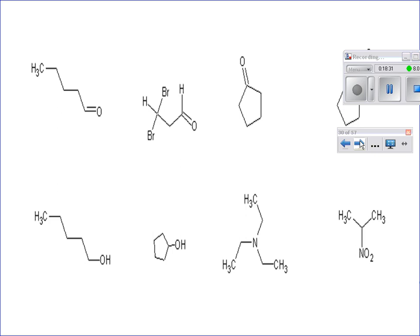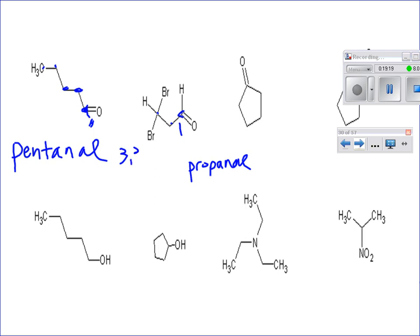The last problems: seeing H-C=O — that's the aldehyde indicator. Count the carbons including the terminal one: one, two, three, four, five — that's pentanal. No number needed since it's always terminal. Next: one, two, three carbons gives propanel as the base name. The terminal carbon is always carbon one, and with two bromo groups at carbon three: 3,3-dibromopropanel.